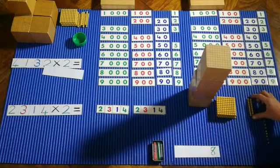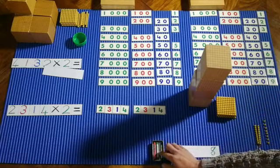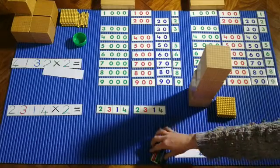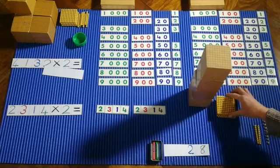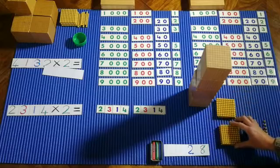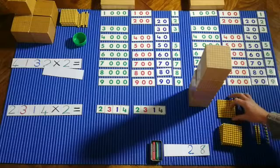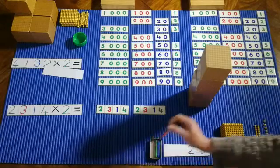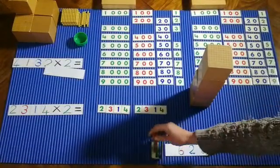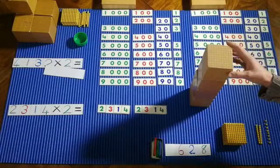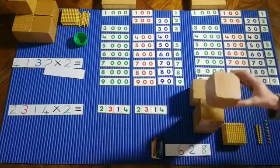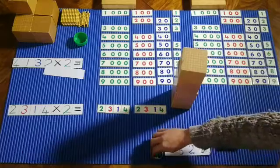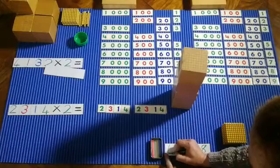Let's count our tens. One ten, two tens. Let's count our hundreds. One hundred, two hundred, three hundred, four hundred, five hundred, six hundred. So we can put the six in our hundred column. Four thousand. So let's put our four in there.